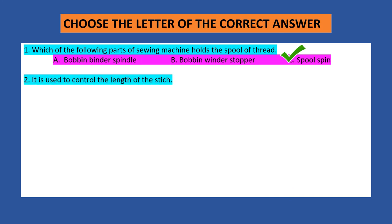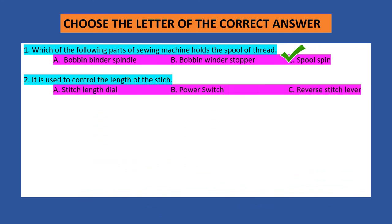Number two: It is used to control the length of the stitch. A. Stitch length dial. B. Power switch. C. Reverse stitch lever. The answer is letter A — stitch length dial.